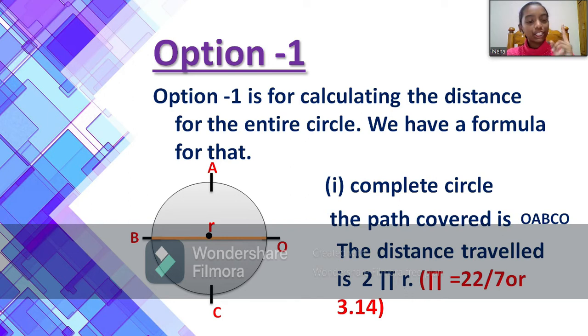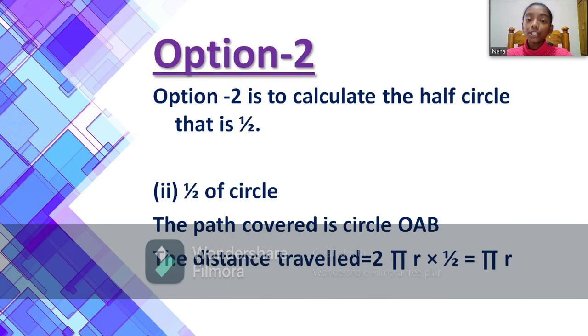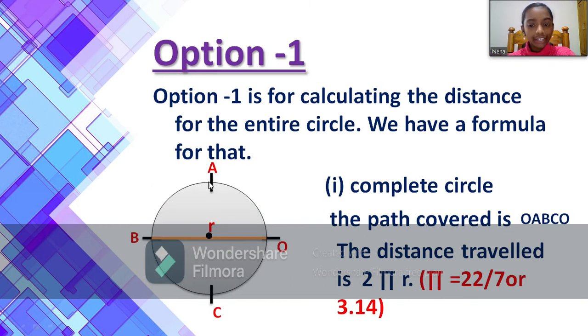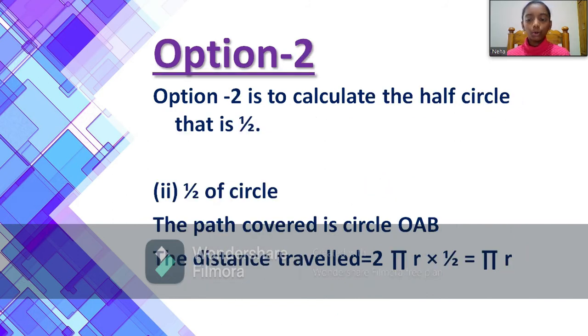Then let's go to option 2. Option 2 is to calculate the half circle, that is ½. So if you have traveled the half circle, that means from point A to B and again to A, this half circle is also known as a semicircle.